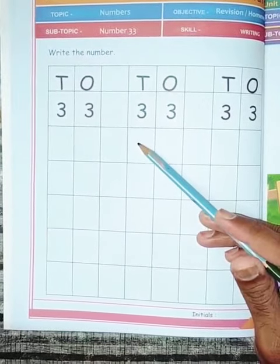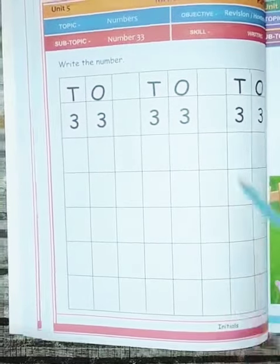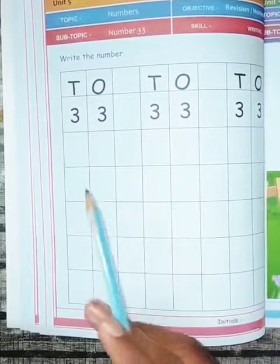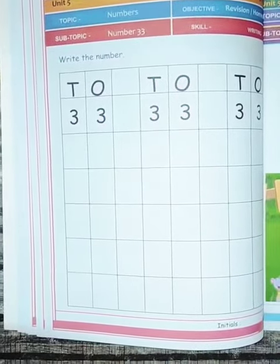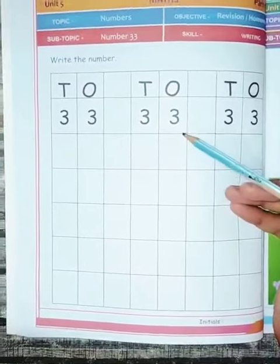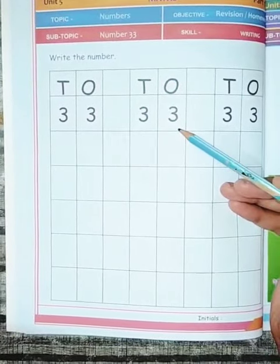You have to write 3 in the tens column and 3 in the ones column. In this way, writing पूरी करनी है और writing करते वक्त बोलना भी है 33, number 33. So in this way we complete our topic number 33.